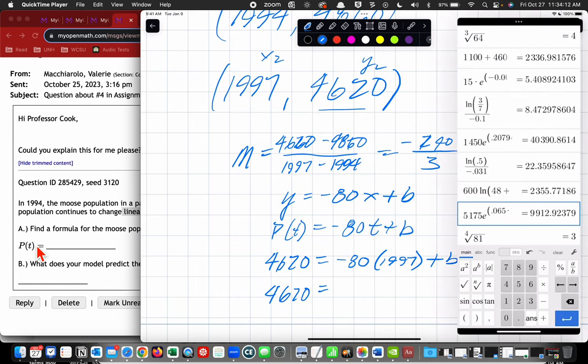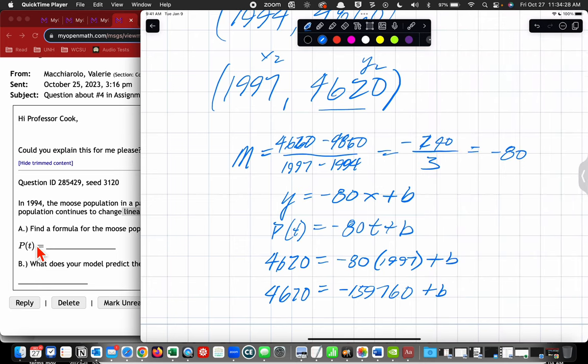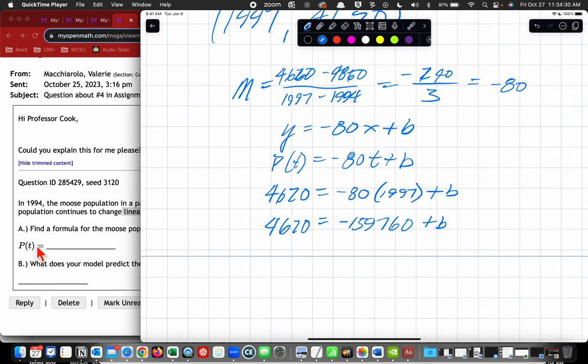Let's see. 1997 times negative 80. This is going to be really weird, because we're using 1997 instead of like 0 for time, because we didn't re-index it. But that's okay. It's not important. I don't think. We'll see what happens with the problem itself. So I'm going to add 159,760 to both sides,